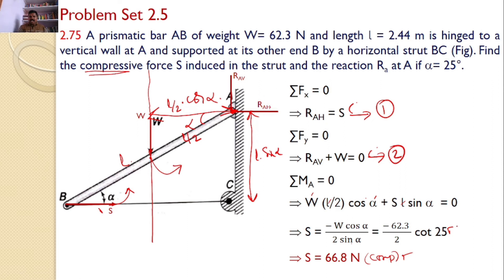Our interest also to find the value of RA reaction at A. For that we need to find RAH and RAV. From equation 1 RAH equals S. Hence RAH equals 66.8 newtons. And RAV equals minus W. Hence it is minus 62.3. What does that indicate? The initial assumed direction of downwards is wrong and the force is acting in the upward direction. But the magnitude is 62.3.